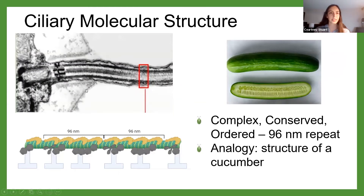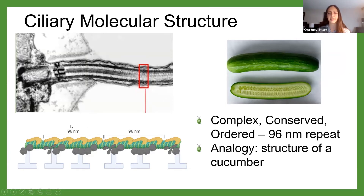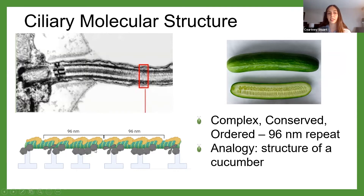Likewise, we can take longitudinal slices — going back to the structure of our cucumber — and it looks the same throughout. We see this in the cilium as well with this 96 nanometer repeat. So every 96 nanometers, we have four outer dynein arms in orange and seven inner dynein arms in gray, and it repeats every 96 nanometers.